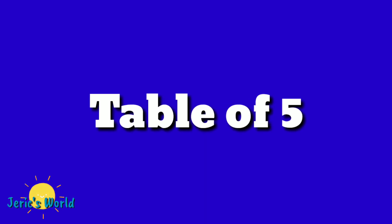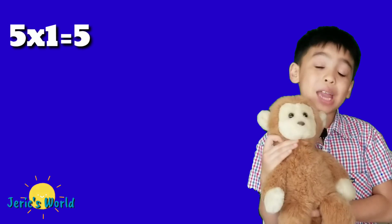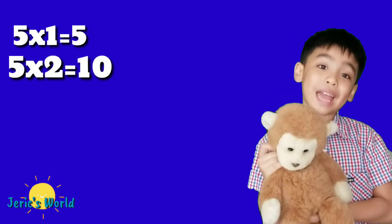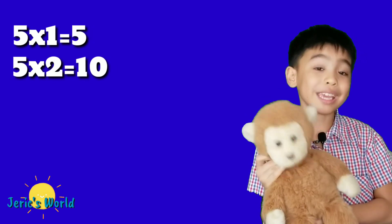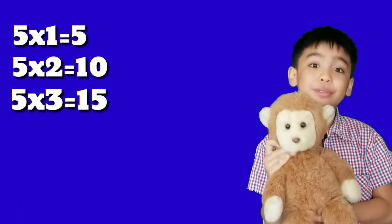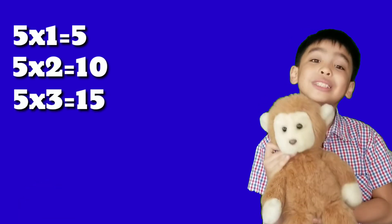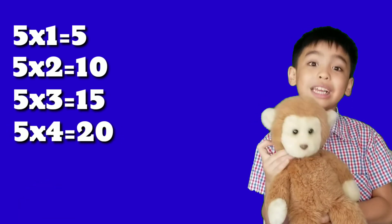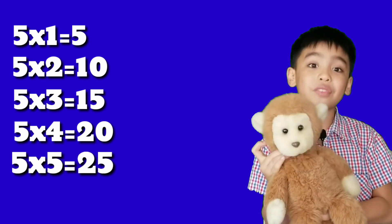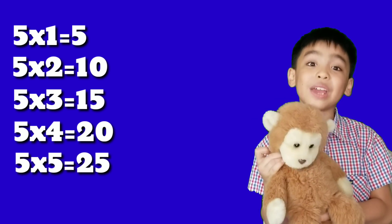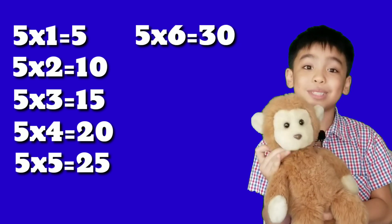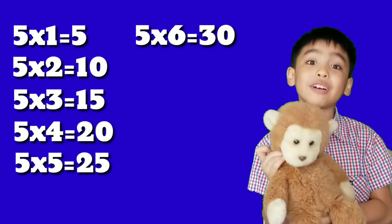Table of 5. 5 times 1 equals 5. 5 times 2 equals 10. 5 times 3 equals 15. 5 times 4 equals 20. 5 times 5 equals 25. 5 times 6 equals 30.